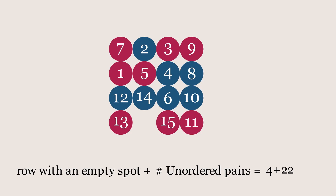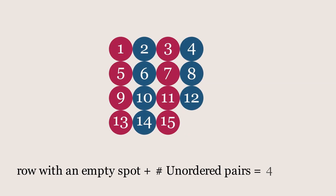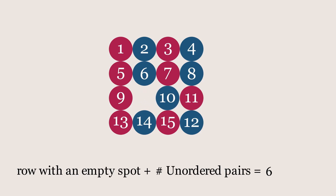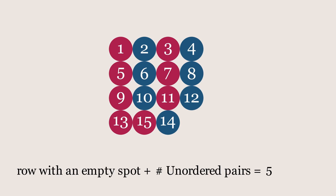To recap: while yes, the value of the function does change, the parity of the function does not. Looking at the correct order, there are no unordered pairs and the empty spot is in the fourth row, so our function evaluates to 4, which is even. Whenever we move a tile, our function will stay even. But for the 14-15 setup, we have exactly one unordered pair — the 14 and 15 tiles — and the empty spot is in the fourth row. Hence the value of our function will be 5, which is odd. No matter how much we move the tiles around, the value will stay odd, and as such we can't reach the original ordering, as it would break the invariant.